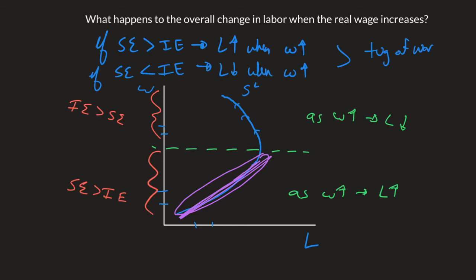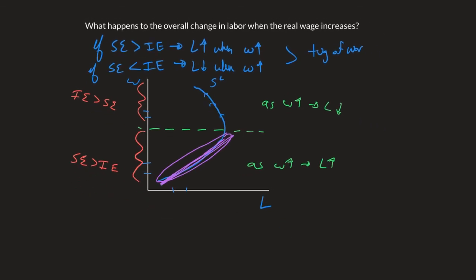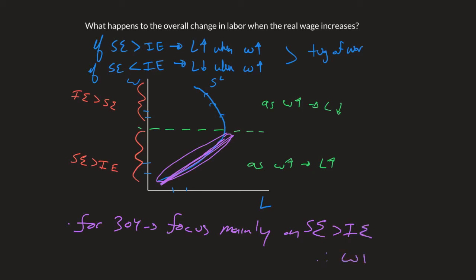So for this class in 304, we're going to focus mainly on when the substitution effect is greater than or dominates the income effect. Therefore, when the wage goes up, we see L go up. The functions that you see will have a positive relationship between the wage — the supply of labor as a function of the real wage will show a positive impact. But the theory and the idea behind income and substitution effect and how that plays a role in the backward bending labor supply curve is important for you to know and understand for your quizzes and exams.